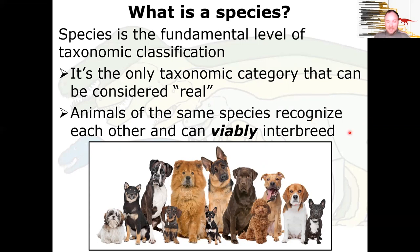All dogs, as different as they may be, are the same species because they recognize each other as dogs and can viably interbreed to make more dogs.